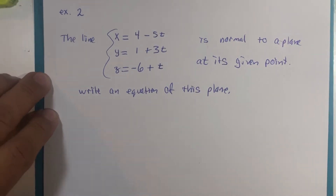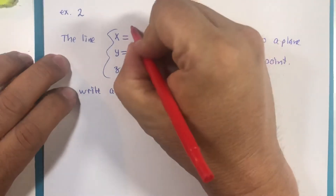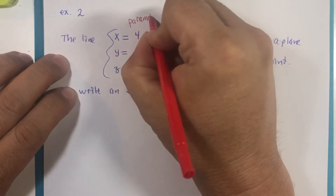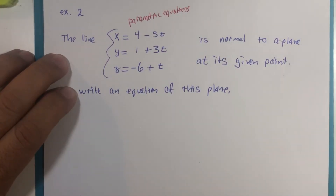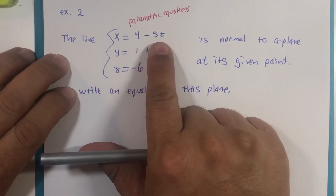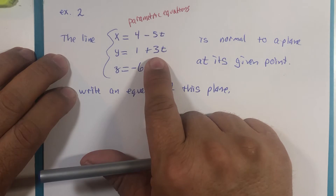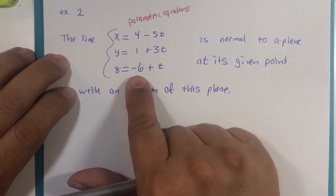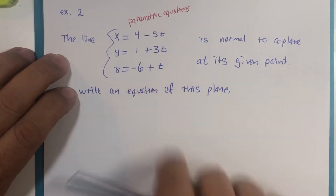Remember you have a pause button — use it if you need it. Here are parametric equations of a line. The X-value starts at 4 and decreases by 5 for every unit of time; the Y-value starts at 1 and increases by 3 for every unit of time; the Z-value starts at negative 6 and increases by 1 unit at a time.